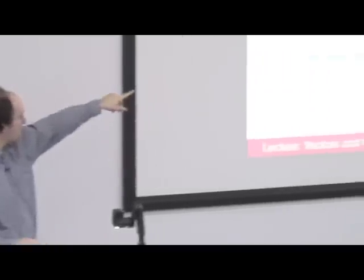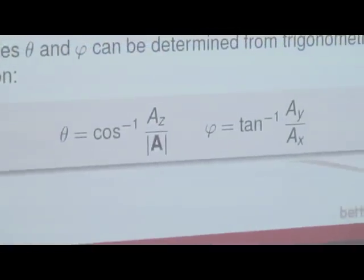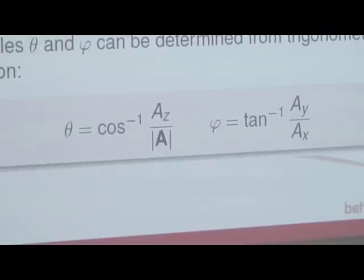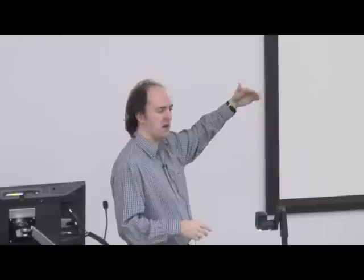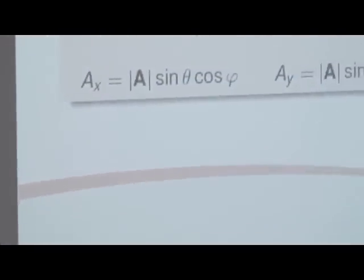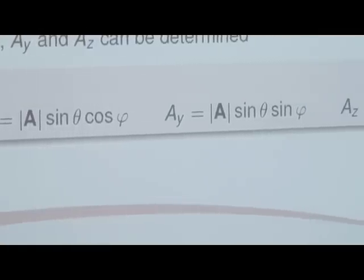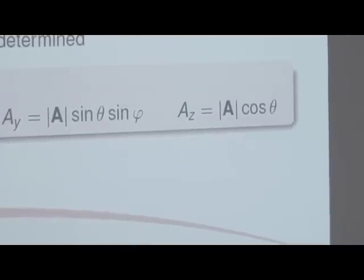The angles theta and phi can be determined from trigonometry just by inspection — SOHCAHTOA and all that. Theta is the inverse cosine of Az over the total magnitude of A, and phi is the inverse tangent of Ay divided by Ax. If we know the angles and the magnitude, then we can determine Ax, Ay, and Az from trigonometry. Ax is the magnitude of A times sine theta times cosine phi. Ay is the magnitude of A times sine theta times sine phi. Az is just the magnitude times cosine theta.